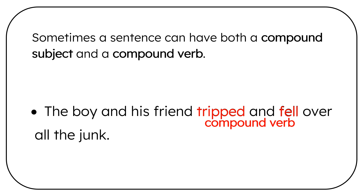And we ask who tripped and fell? We have the boy and his friend. Boy and friend are joined with the conjunction and, and also the adjective his. That's a compound subject. Boy and his friend tripped and fell.